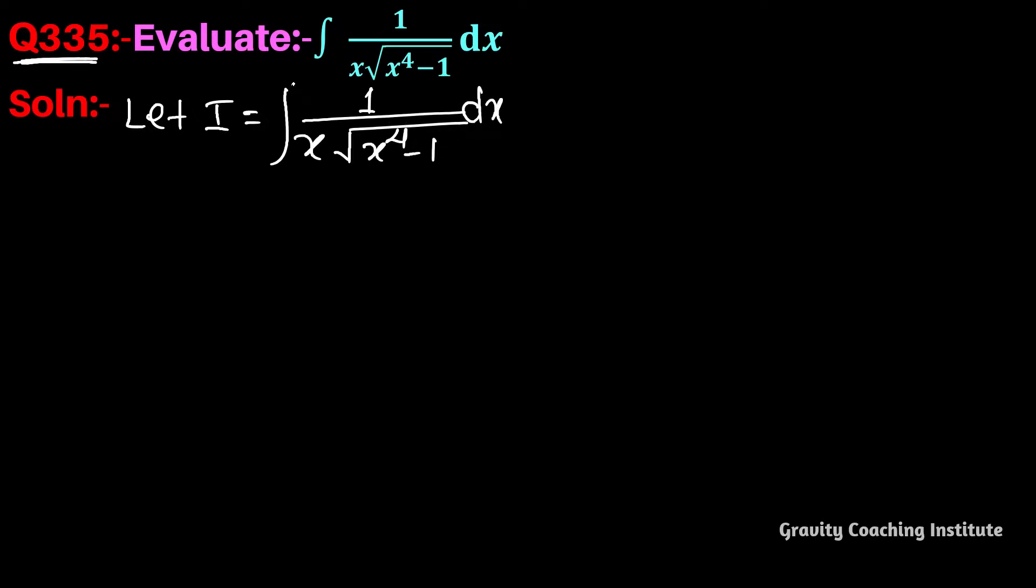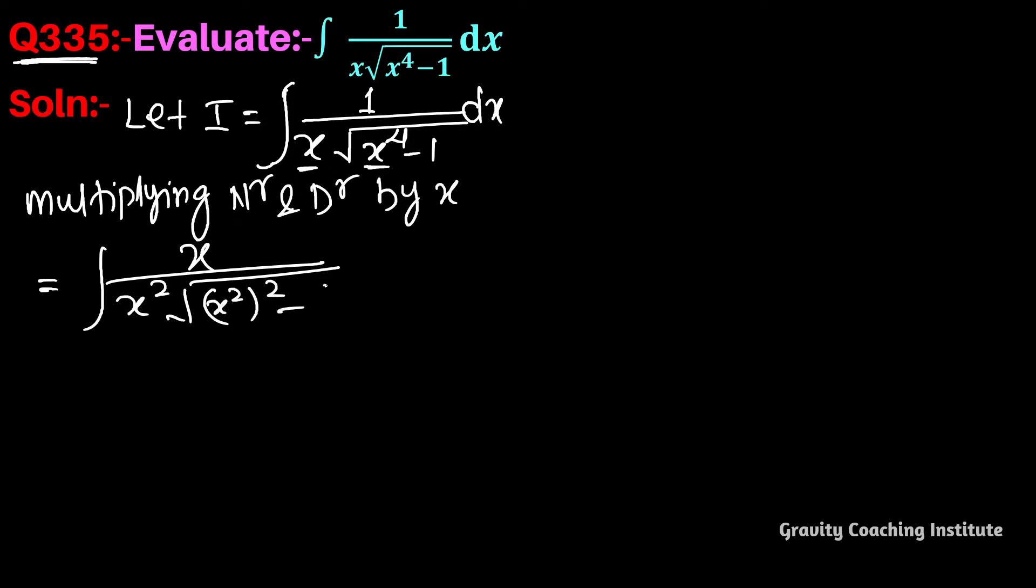This is the first step. We want to multiply the numerator and denominator by x. So multiplying numerator and denominator by x, we get x divided by x squared into square root of x to the power 4, which we can write as x squared whole square minus 1.